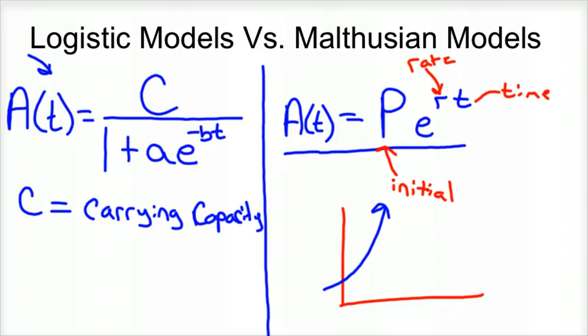Then B is our rate of growth, our constant rate of growth. So maybe we grow at 12% a year, so B would be 0.12.